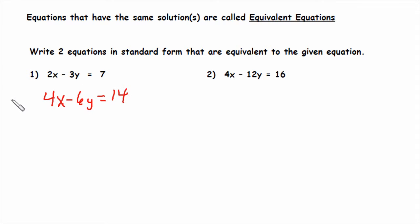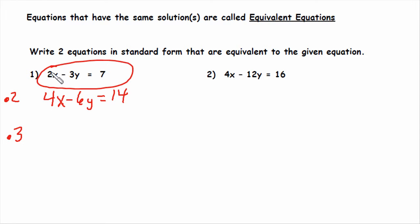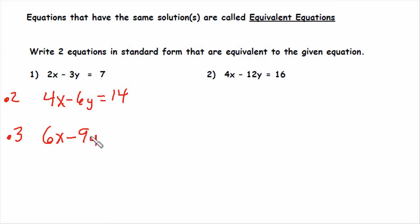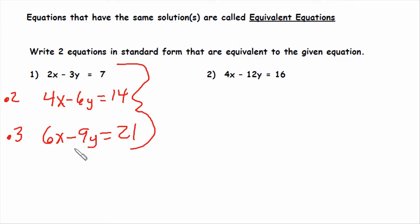Then we multiply by three. Going back to the original equation and multiplying all terms by three gives us 6x minus 9y equals 21. So all three of these equations represent the exact same line. If you graph them, they would lay right on top of one another. They are called equivalent equations.